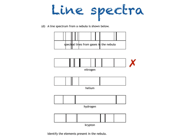If we look at helium, all of its spectral lines are present in the nebula's line spectrum, and it's the same for hydrogen. So they're both present.